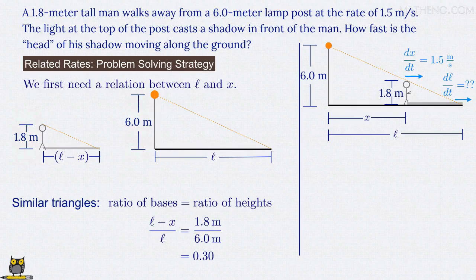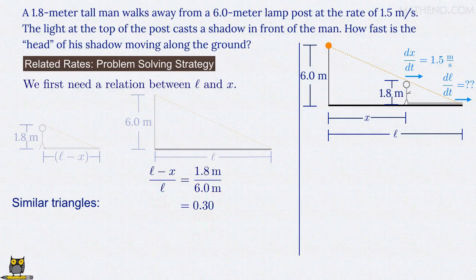We can now solve for l in terms of x with just a little algebra. We first move l from the denominator on the left over to the right, so we have l - x equals 0.30 times l. Then collecting all of the l's on the left and moving x to the right, we have l - 0.30l equals x, or 0.70l equals x. And that's it.